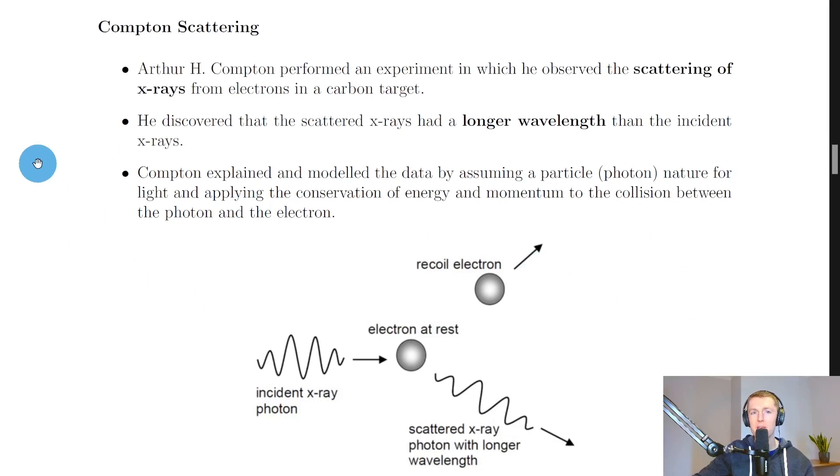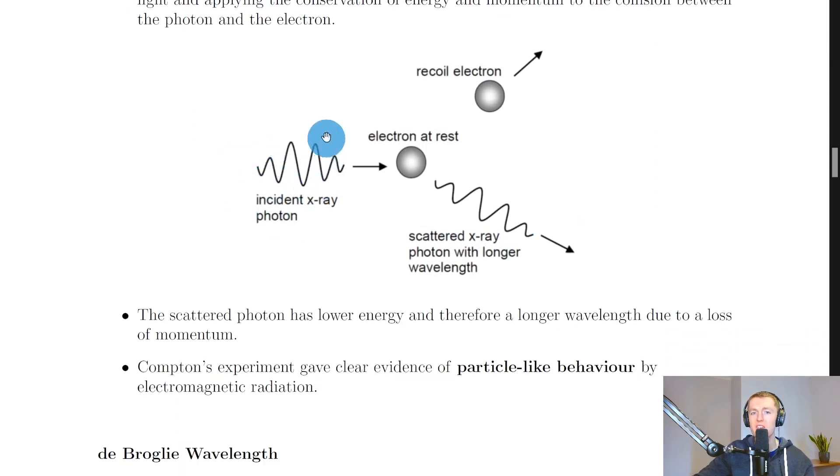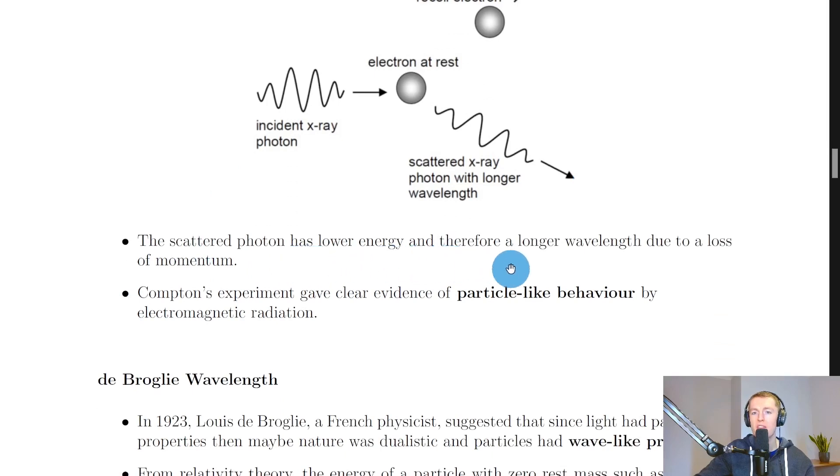Going back to the notes we'll finish by looking at another piece of evidence here which is Compton scattering. Arthur H. Compton performed an experiment in which he observed the scattering of x-rays from electrons in a carbon target. He discovered that the scattered x-rays had a longer wavelength than the incident x-rays. Compton explained and modelled the data by assuming a particle i.e. photon nature for light and applying the conservation of energy and momentum to the collision between the photon and the electron. So if we look at this picture here you'll see we have the incident x-ray photon coming in and hitting off this electron which is stationary. Then what he saw was that the electron would recoil off to one side and the x-ray would scatter to the other side but with a longer wavelength. It then says the scattered photon has lower energy and therefore a longer wavelength due to a loss of momentum. Compton's experiment gave clear evidence of particle-like behaviour by electromagnetic radiation.